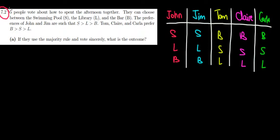Let's have a look at question two here. We have five people who vote about how to spend the afternoon together. There's three options: swimming pool, library, and bar. The preferences are given as follows. John and Jim prefer S over L over B. The other three guys prefer B over S over L.